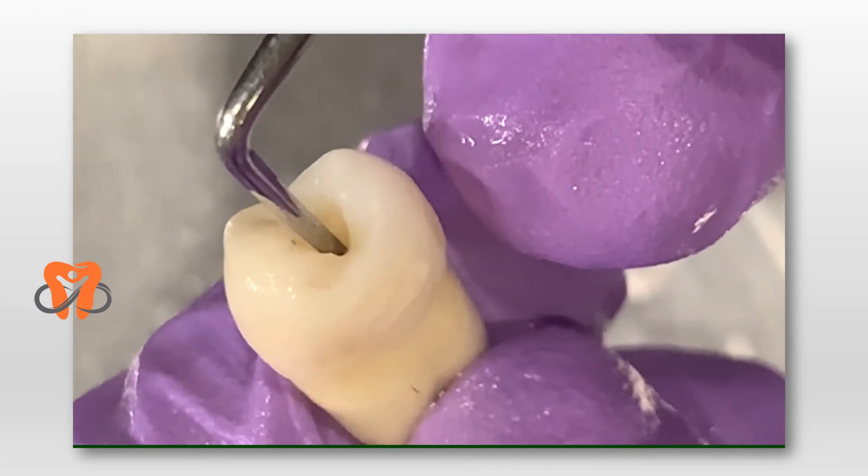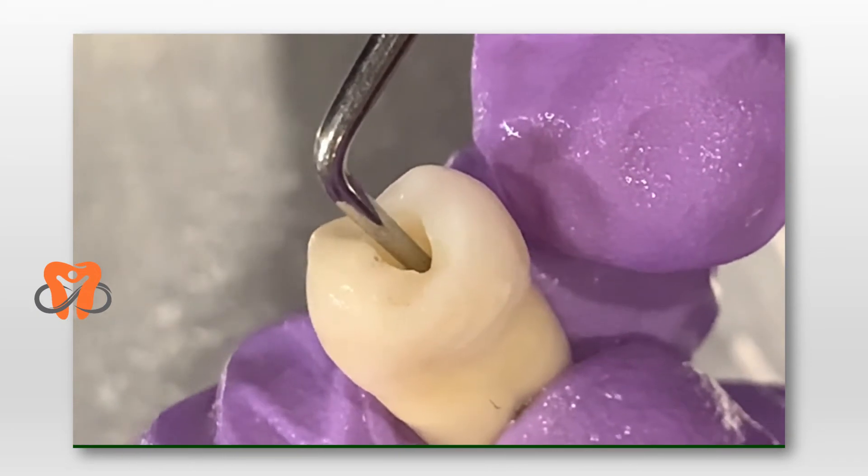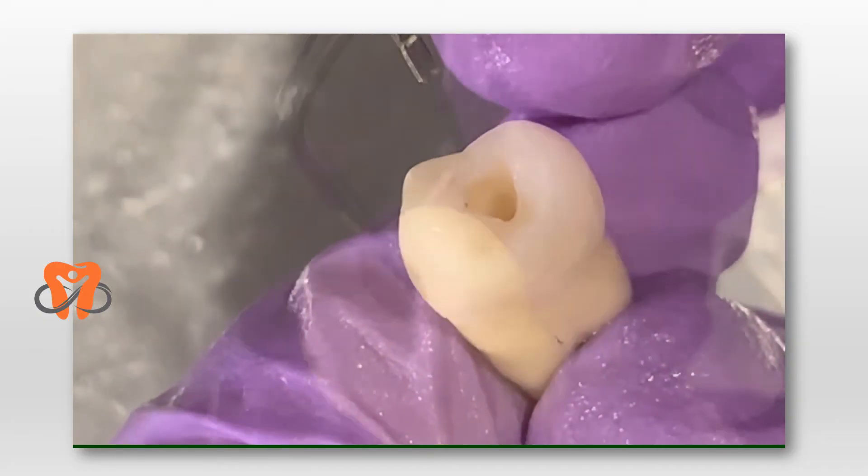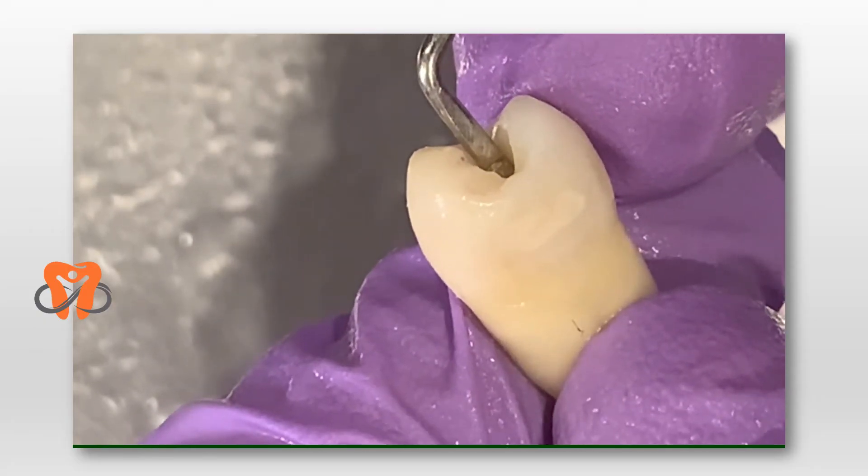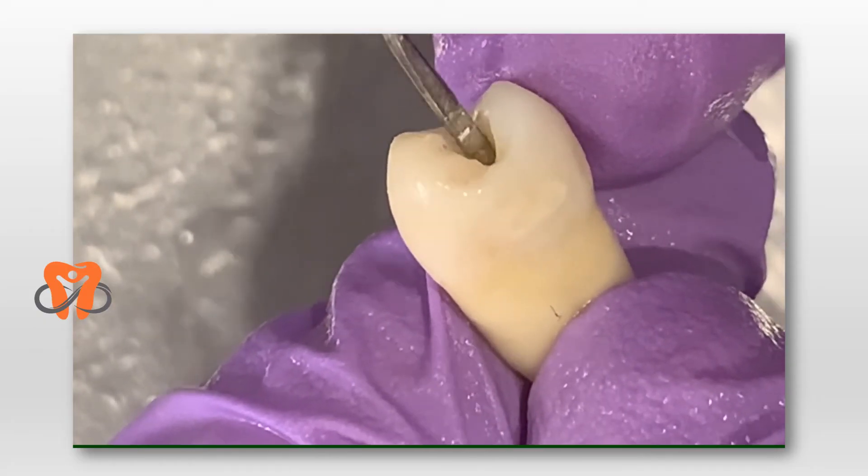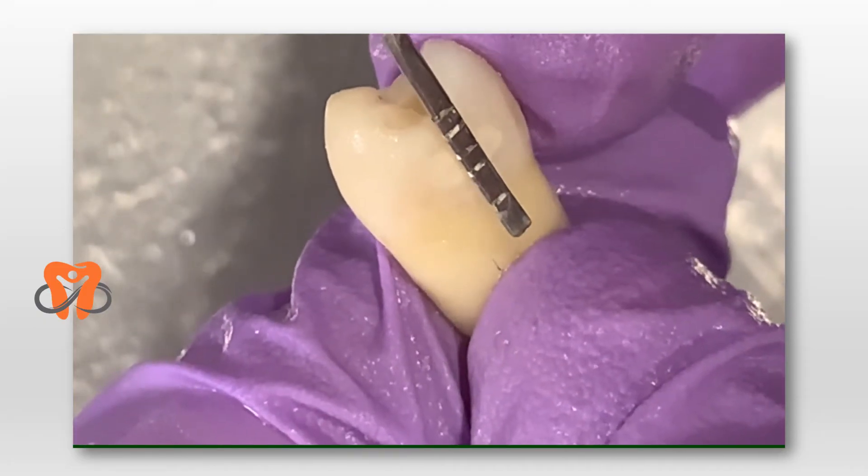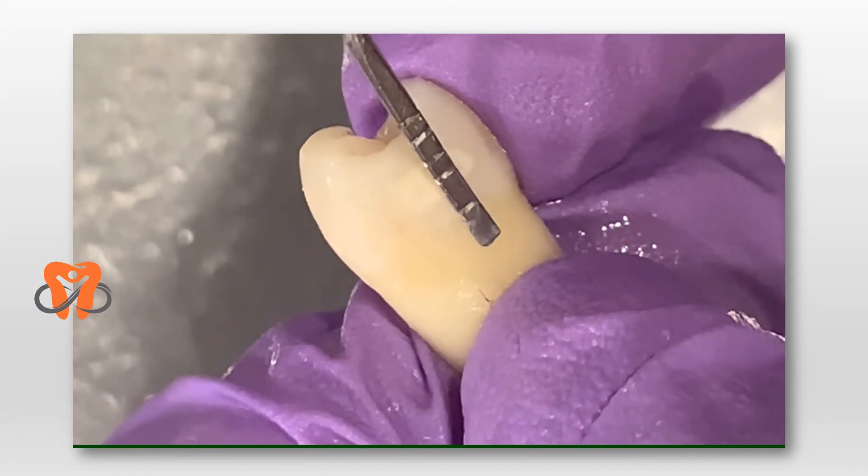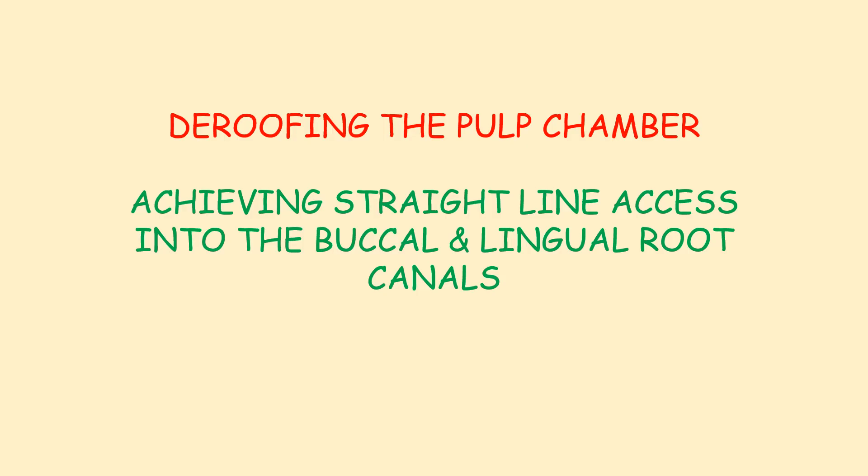With help of this endodontic explorer, we explore the pulp chamber. With help of a serrated probe, we note the depth of the pulp chamber. We take it out and place it against the tooth. You can observe that the location of your pulp chamber is roughly in the cervical one-third of the crown.